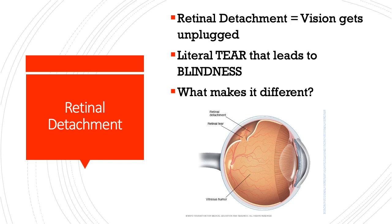This isn't something you'll necessarily see from the outside like with cataracts, but this person will have symptoms like light flashes in front of their eyes, vision changes where they see cobwebs or a hair-net appearance. When it gets really bad and the retina is completely detaching, there is a painless loss of vision that many people describe as a curtain going across their vision. This is a medical emergency requiring emergent surgery to close the tear.